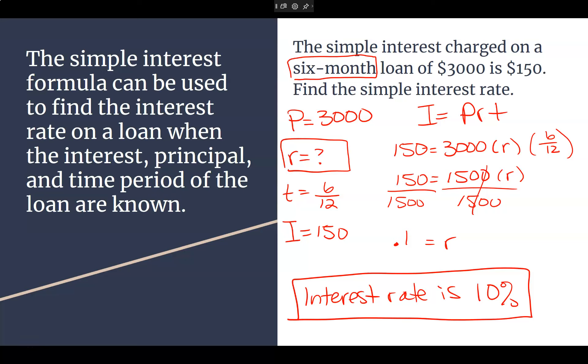So, we can use this formula to find missing principle, missing rate, missing time. As long as I have everything else, we can find other missing pieces. Bonus question. How much money was in this after six months? 3,150. Good. Started off with 3,000. It earned 150. Together, 3,150.